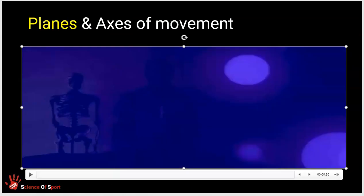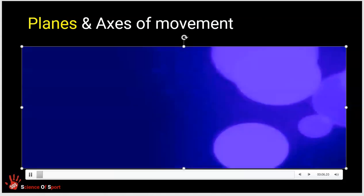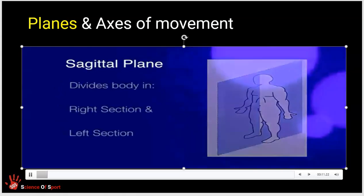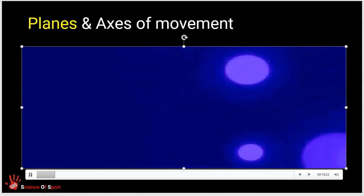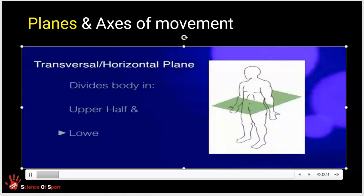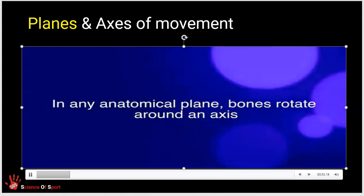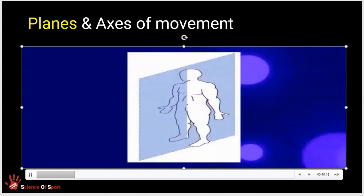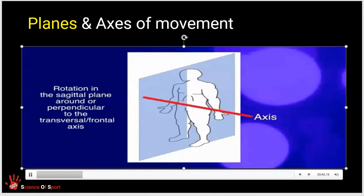There is a supplementary video directed at physiotherapists that goes through the planes and axes of movement and acknowledges the types of movement that occur in each plane. For explanations, we always start in the anatomical position. The sagittal plane divides the body into right and left sections. The frontal plane divides the body into front and back sections. The transverse or horizontal plane divides the body into an upper and lower half. When a movement takes place in a plane, bones rotate around an axis of rotation. A movement in the sagittal plane involves rotation around or perpendicular to the transverse or so-called frontal axis.